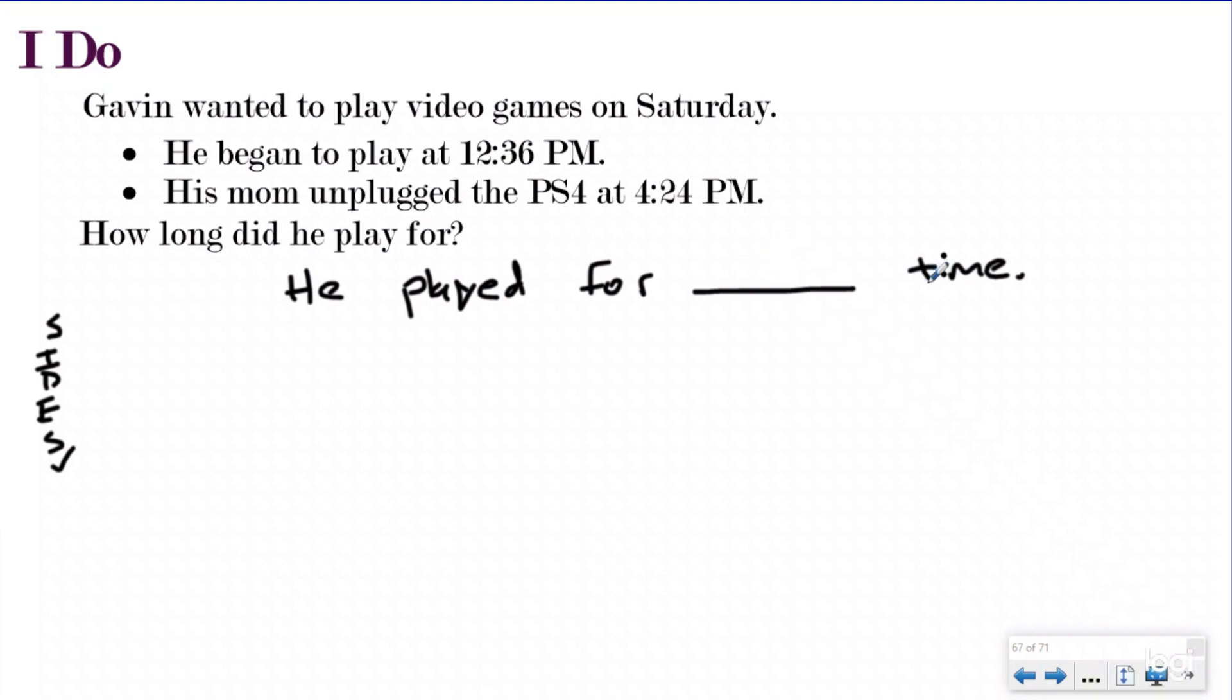And I know I'm going to come back here, and it's going to be either hours or minutes, but for right now, I don't know what that's going to be yet. So I just put time. I'm looking for anything about time or what he was playing. Gavin wanted to play video games on Saturday. He began to play at 12:36 p.m. I know that's important because that's my start time. His mom finally had enough. He probably wasn't listening to her. And so she unplugged the PS4. No! At 4:24 p.m. How long did he play for?